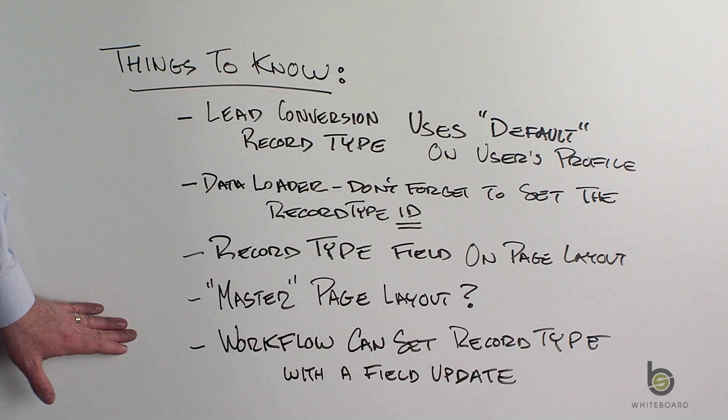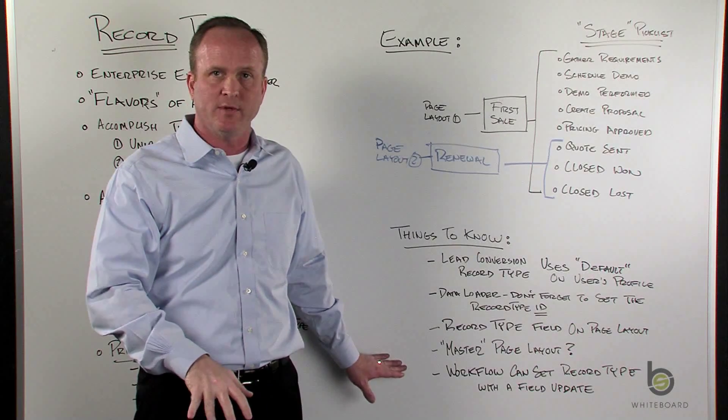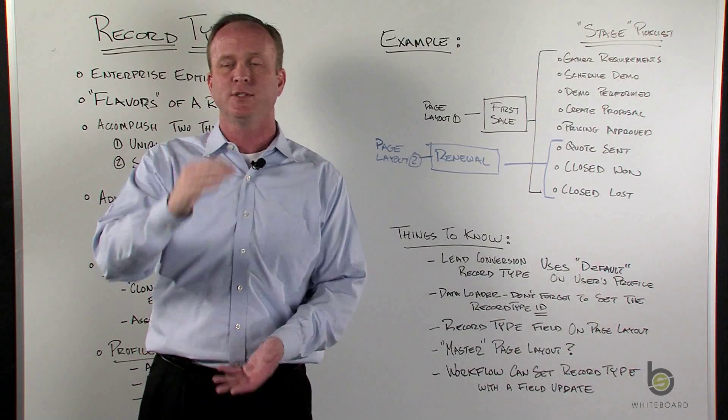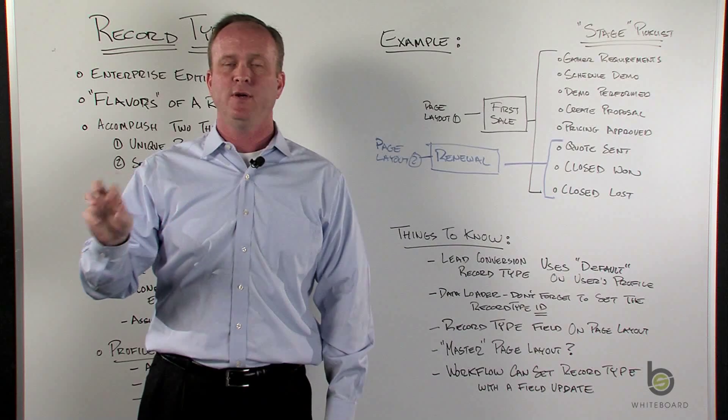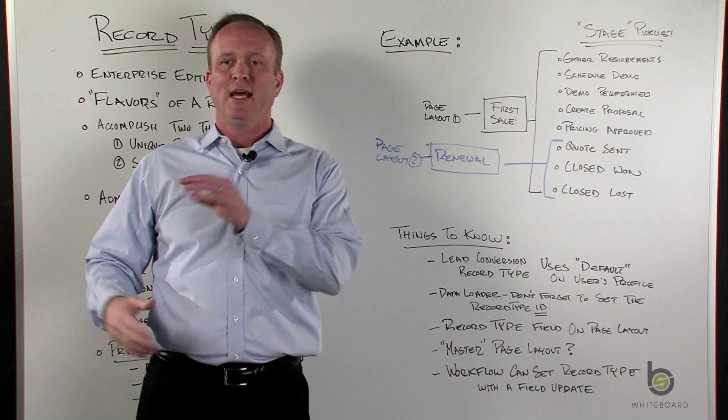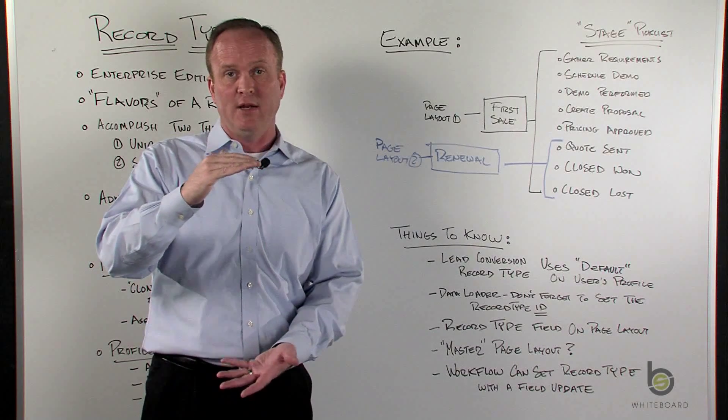Kind of a tip, and this varies by different system administrators, but when you start as a system admin managing multiple page layouts and multiple record types, some people like to make a master page layout that has all the fields available. So maybe you have an object with 100 fields, and record type 1 has a unique page layout with 30, record type 2 has a page layout with 40.